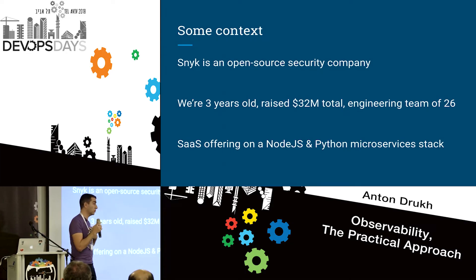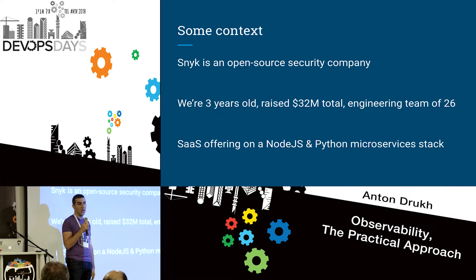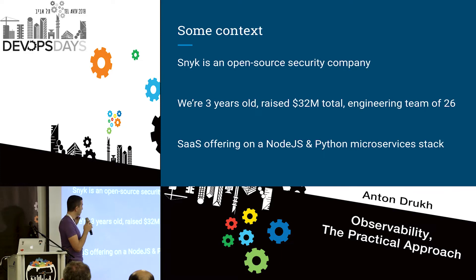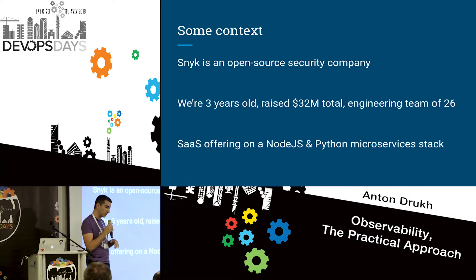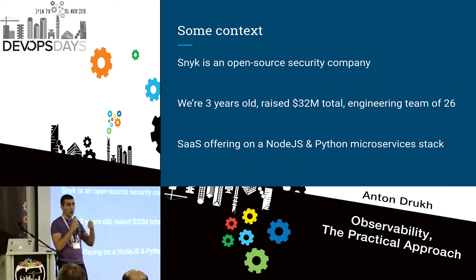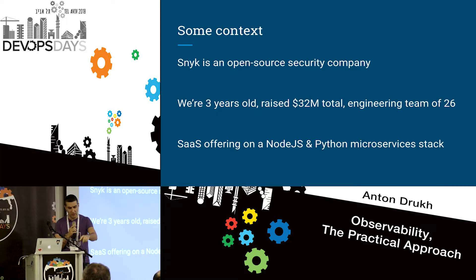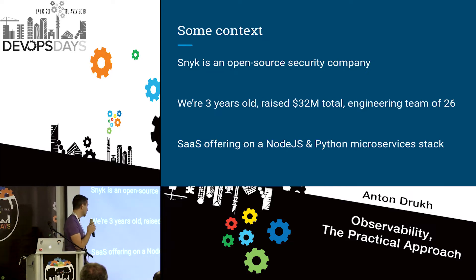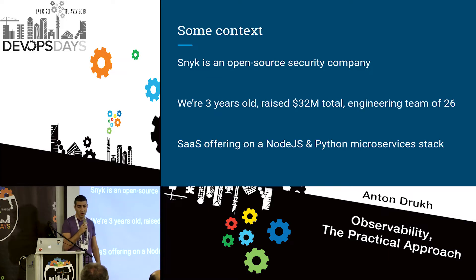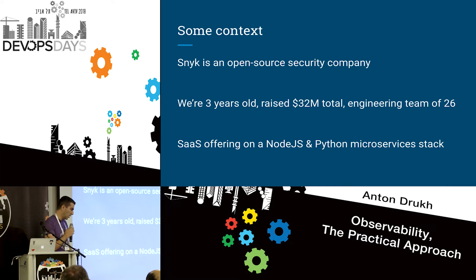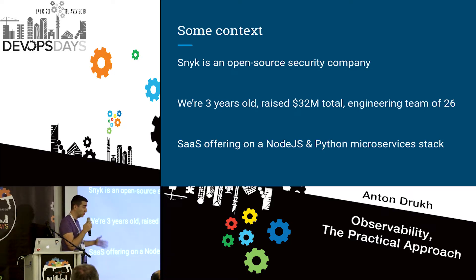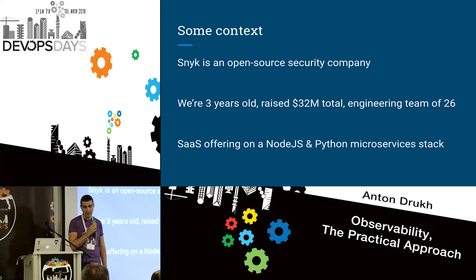First, some context. What I'm going to share is based a lot on our personal experience as a team at Snyk and is not easily copy-pastable to any other organization. We're a young dev tooling company operating in the security and open source space, which makes it very easy to adopt relevant technologies. We're building a SaaS offering based on a Kubernetes cluster. Node.js and Python are the main languages in our microservices stack. Whenever you hear something and say, how come it works for them — try to ask yourself whether this is your reality. I urge you to ask questions and interrupt me if anything is unclear.